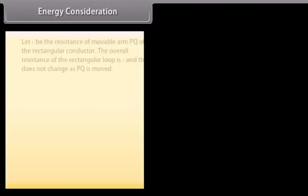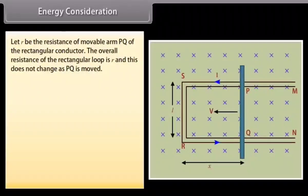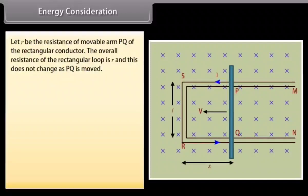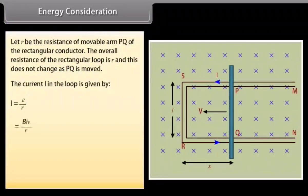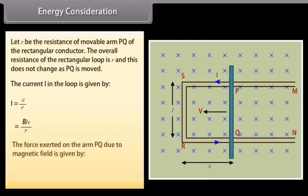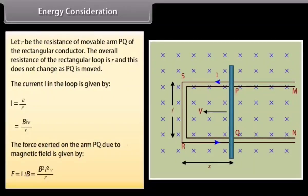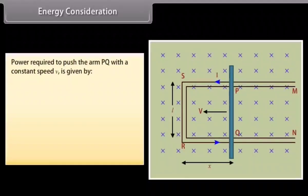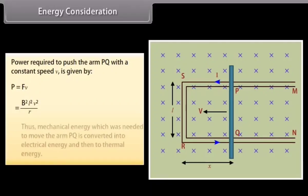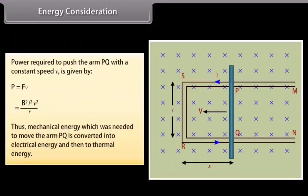Energy Consideration: Let R be the resistance of the movable arm PQ of the rectangular conductor. The overall resistance of the rectangular loop is R and does not change as PQ is moved. The current I in the loop is given by E/R = BLV/R. The force exerted on arm PQ due to the magnetic field is ILB = B²L²V/R. The power required to push arm PQ with constant speed V is given by B²L²V²/R. Thus, mechanical energy needed to move arm PQ is converted into electrical energy and then to thermal energy.